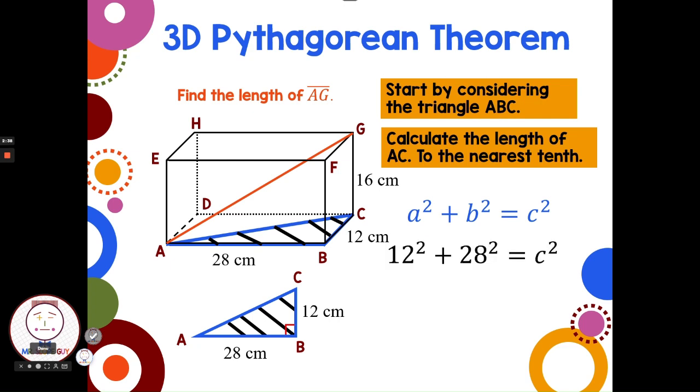Then we'll substitute in. The legs are interchangeable. 12 and 28 have to be the a and the b, but can go in either order. And we're finding the hypotenuse, the c value. 12 squared is 144, 28 squared is 784. Add those together and take the square root, and I get 30.5.